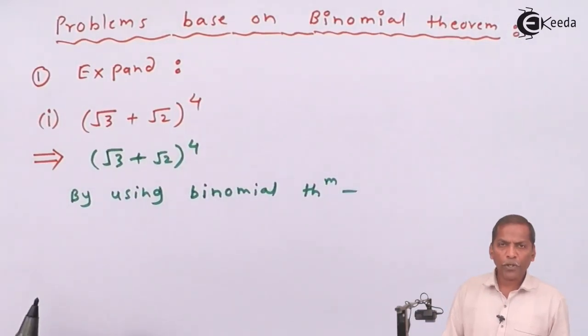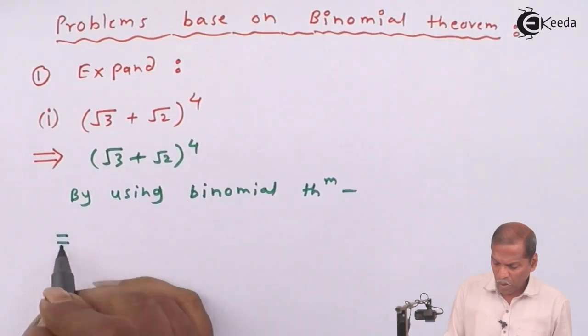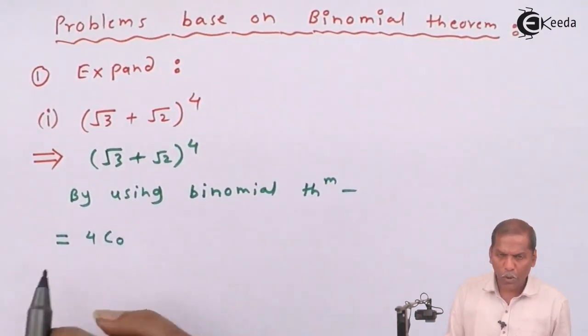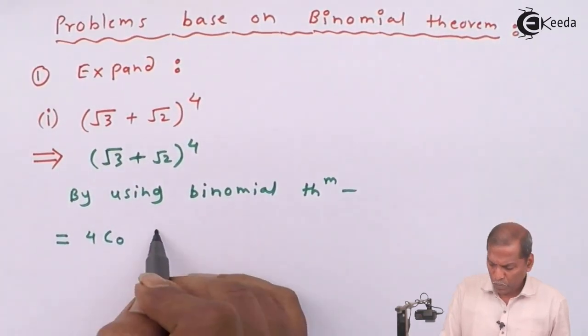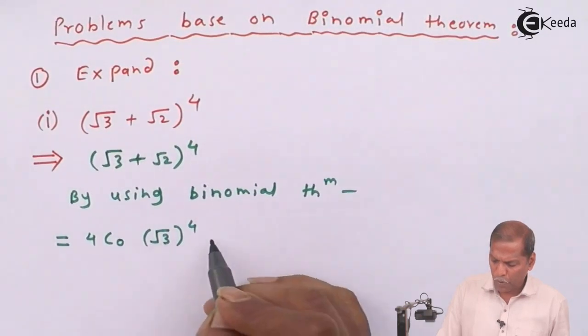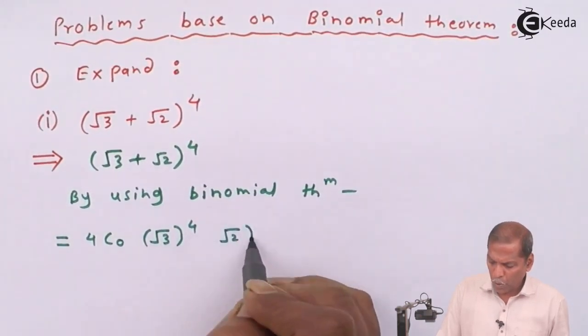The above expression can be written as equal to 4C0 root 3 bracket raised 4 into root 2 bracket raised 0.